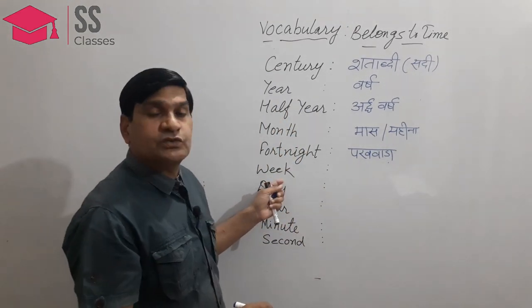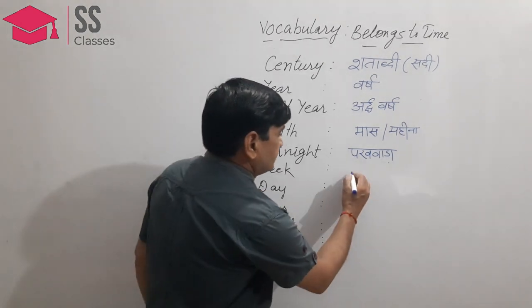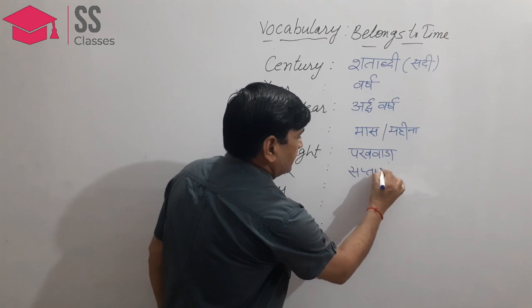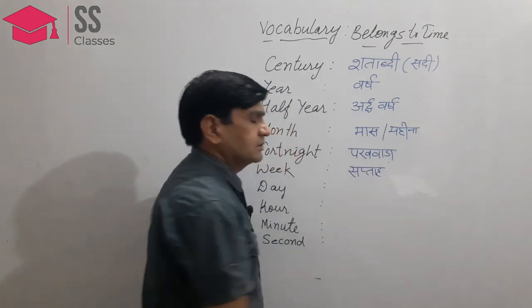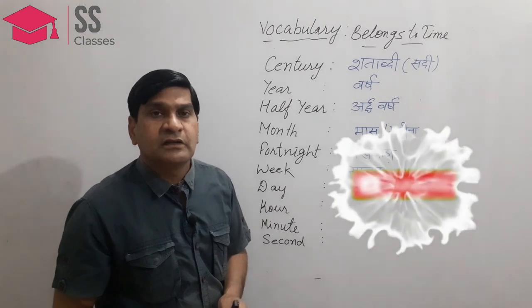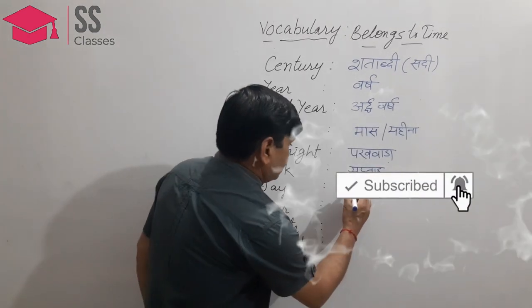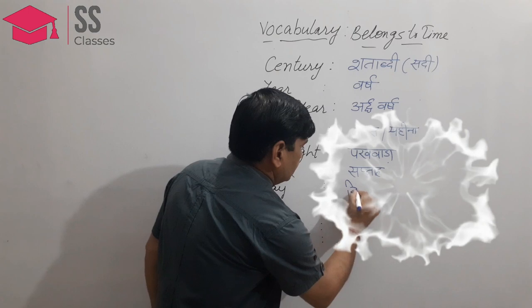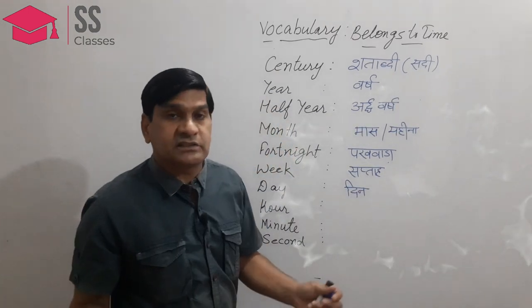Our next word is week — a period of 7 days. In Hindi, we say saptah. Next word is day — a period of 24 hours. In Hindi, we say dibas.